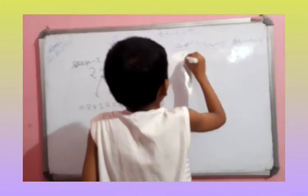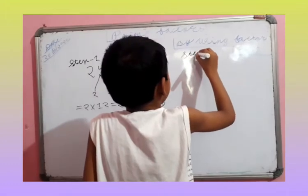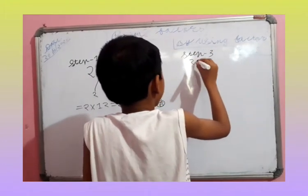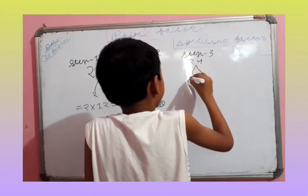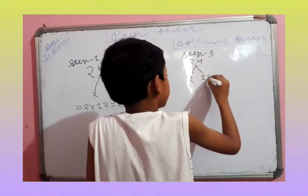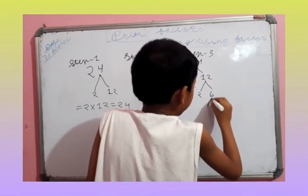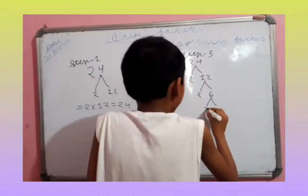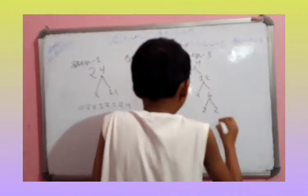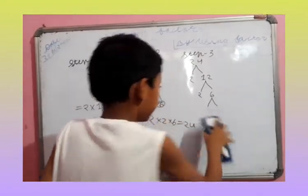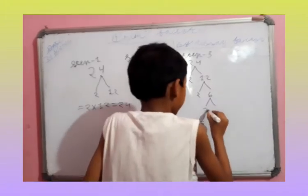Step 3. It is getting broader. Now, 24 divides into 2 and 12. 12 divides into 2 and 6. And 6 is divided into 2 and 3. Oh, it's done wrong. Okay. Put 2 and 3.